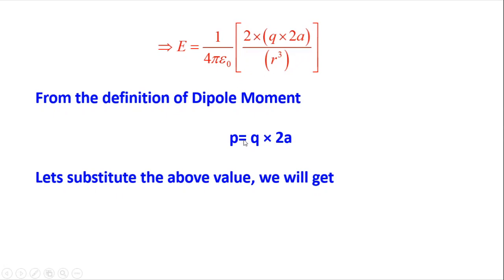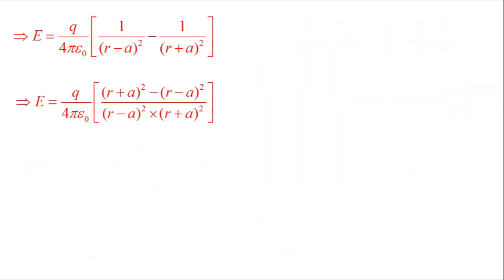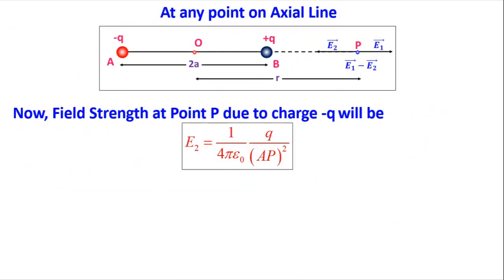From the definition of dipole moment, p = q × 2a. Substituting, the final expression becomes E = (1/4πε₀) × (2p / r³). This is the final expression for the electric field at any point on the axial line of the dipole — a very very important result.